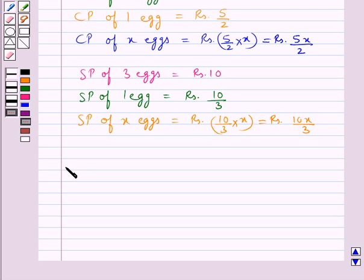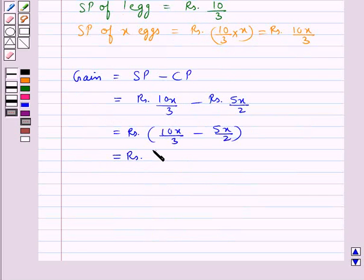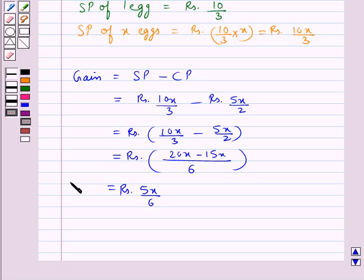Now from here we get gain is equal to Rs. 10x upon 3 minus Rs. 5x upon 2. That is equal to Rs. 10x upon 3 minus Rs. 5x upon 2 equal to Rs. 5x upon 6. This is the gain.